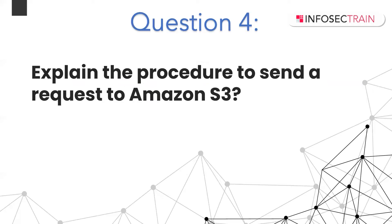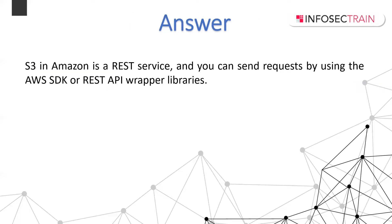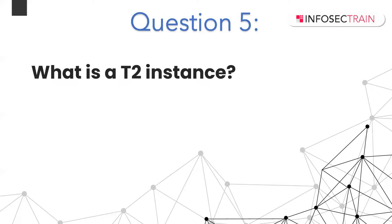The next question is: explain the procedure to send a request to Amazon S3. Amazon S3 is a REST service, so you can send requests using the REST API or AWS SDK wrapper libraries that wrap the underlying Amazon S3 REST API, simplifying your programming tasks. Every interaction with Amazon S3 is either authenticated or anonymous. The next question is: what is a T2 instance?